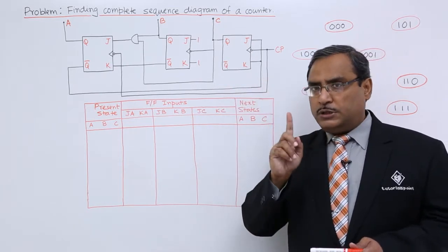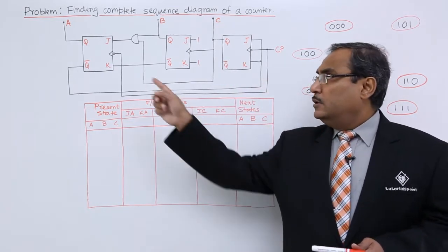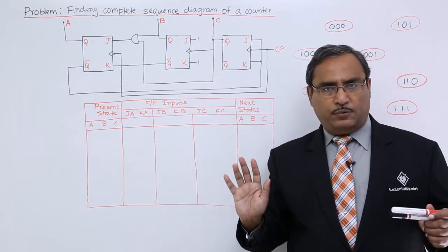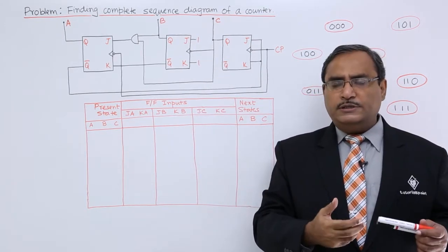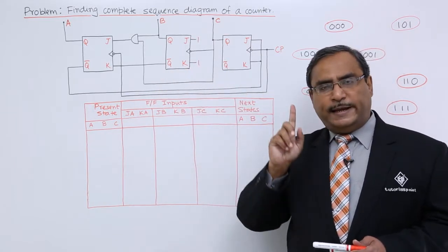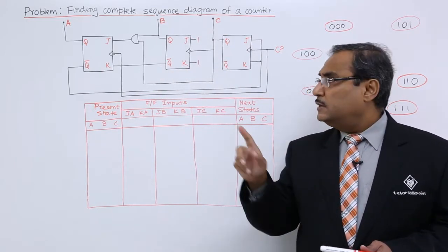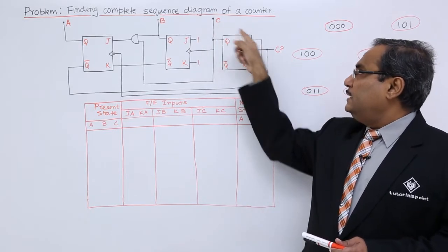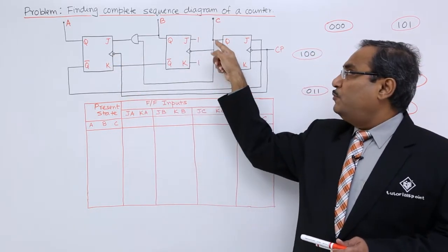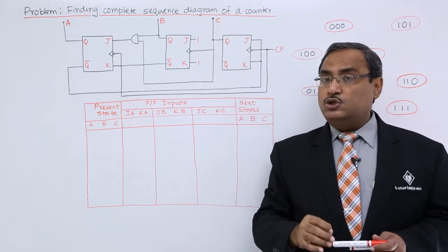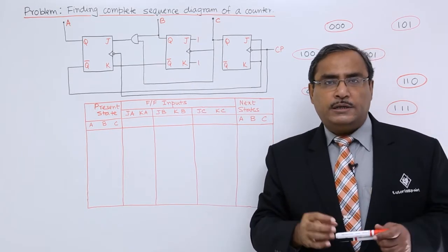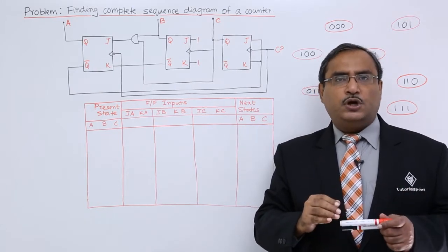First we shall have to observe two issues. Issue number one is whether all the flip-flops are same or they are different. Here in this case all the flip-flops are JK flip-flops, but it might happen that some of them are T, some are SR and some are JK. Next observation: are all the flip-flops getting clock pulse from the main CP? Flip-flop C and flip-flop A are getting clock pulse from the main source, but flip-flop B is getting clock pulse from the previous flip-flop. That is why this counter is asynchronous, which will make the problem a little bit harder.